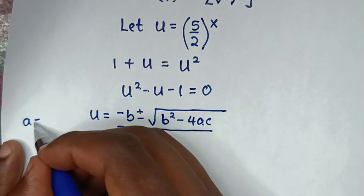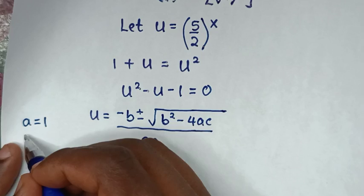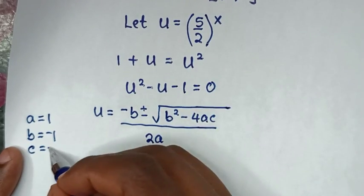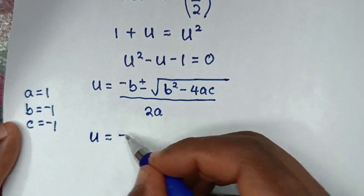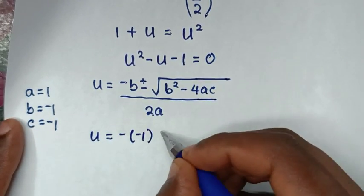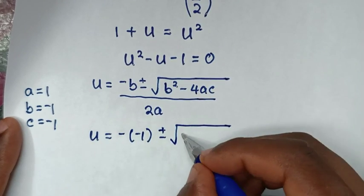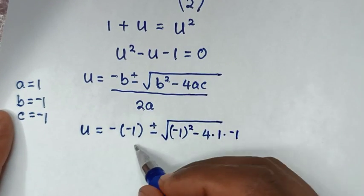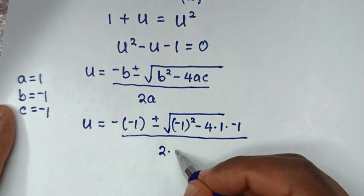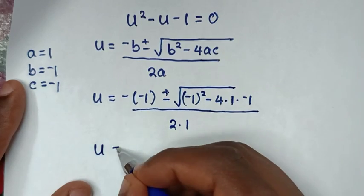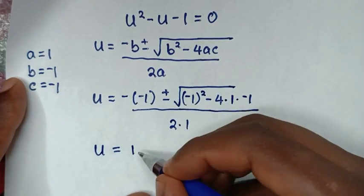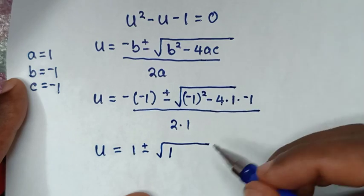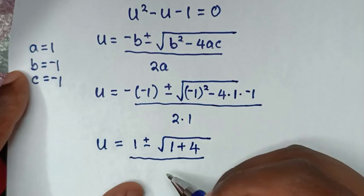We solve this quadratic equation using the quadratic formula: u equals negative b plus or minus square root of b squared minus 4ac, over 2a. Here, a equals 1 (coefficient of u²), b equals negative 1 (coefficient of u), and c equals negative 1 (constant). Substituting: u equals negative (−1) plus or minus square root of (−1)² minus 4(1)(−1), over 2(1). That gives negative 1 squared equals 1, and negative 4 times 1 times negative 1 is positive 4, over 2.